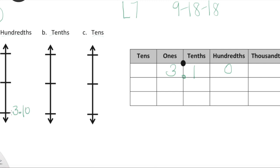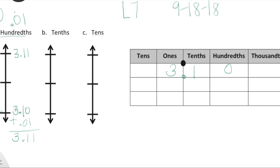The difference between the low side and the high side has to equal whatever place value we're rounding to. Here we're rounding to hundredths, so the difference between the low and the high side has to be one hundredth. To figure out the high side, I need to add one hundredth: 3.10 plus one hundredth is 3.11. So our low is 3.10 and our high is 3.11.